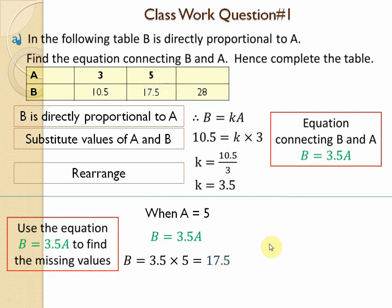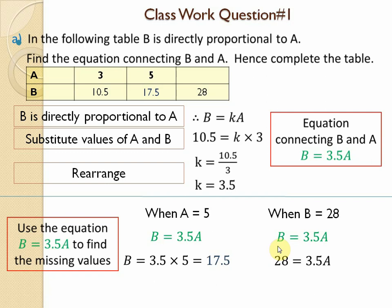For the second part, when b = 28, we write the equation b = 3.5a and substitute b = 28. Dividing 28 by 3.5 gives a = 8. Write the value a = 8 in the table.